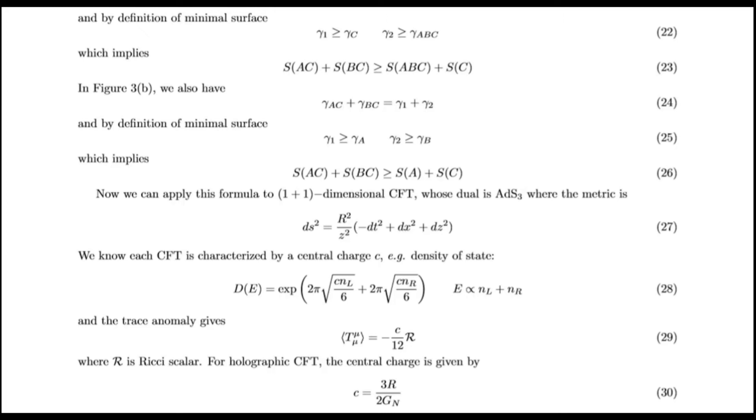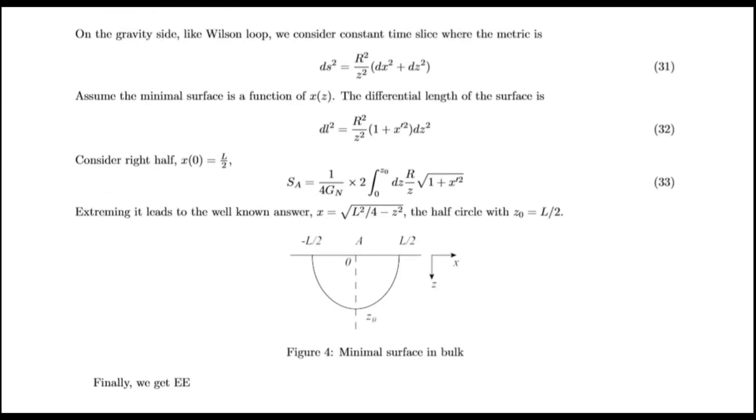Now we can apply this formula to 1 plus 1 dimensional CFT whose duality AdS3 where the metric is this. We know each CFT is characterized by a central charge C density of state. And the trace anomaly gives this, where R is a Ricci scalar. From holographic CFT, the central charge is given by this. On the gravity side, like Wilson loop, we consider constant time slice where the metric is this. Assume the minimal surface is a function of x(z). The differential length of the surface is this, and extremize it leads to the well-known answer, the half-circle with z0.